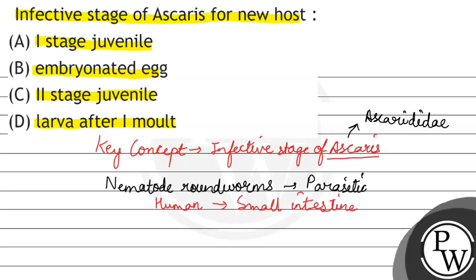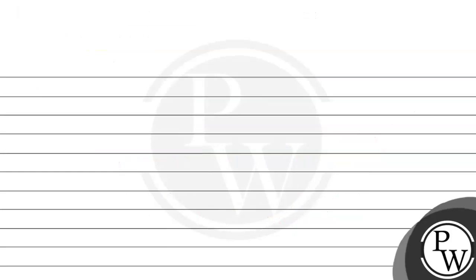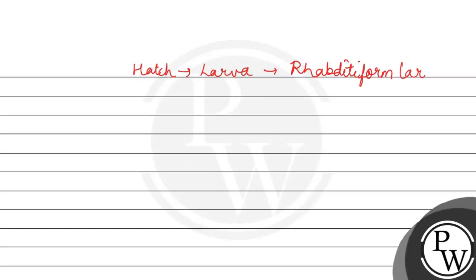Jab bhi koi human ingest kar leta hai the egg of Ascaris through contaminated food or water, ye egg hamara jab reach karta hai small intestine, toh isme se hatch hota hai, ya release hota hai larva, jisko hum bolte hain first larva aur rhabditiform larva. Toh ye first larva ya rhabditiform larva is not infective.